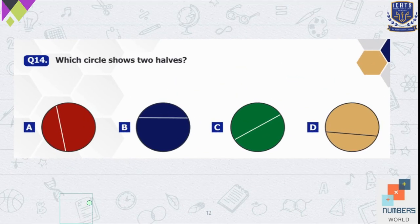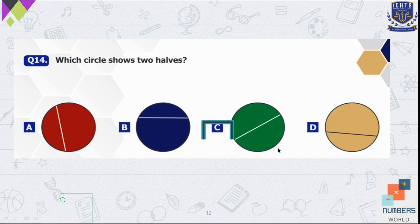Question number 14 — which circle shows two halves? Options A, B, and D are not representing exact two halves. Option C is the correct one, representing two equal halves of the circle.